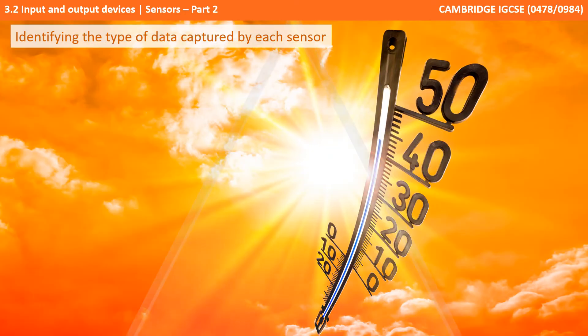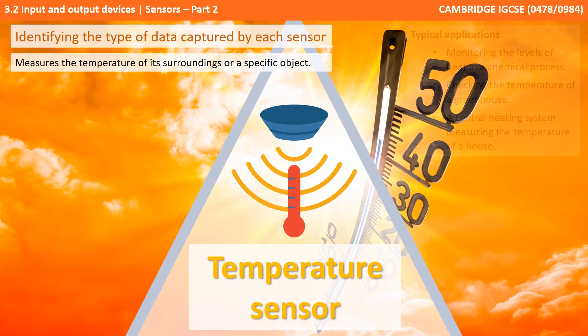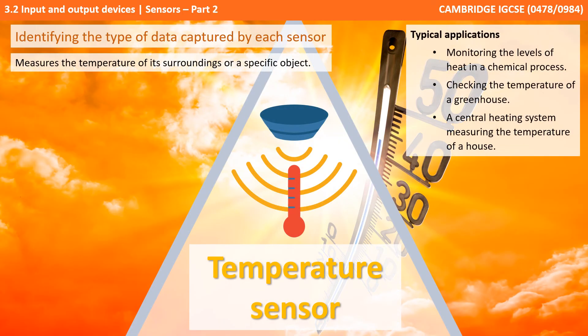And finally we have temperature sensors. These measure the temperature of their surroundings or of a specific object. Obvious examples include monitoring heat in a chemical process, monitoring temperature in a greenhouse, or monitoring temperature in a house as part of a central heating system.